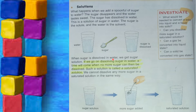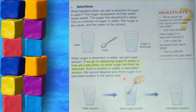When sugar is dissolved in water we get a sugar solution. If we keep dissolving sugar in water, a time will come when no more sugar can be dissolved — such a solution is called a saturated solution. We cannot dissolve any more sugar in a saturated solution. If we add more sugar to the sugar solution we already made, it will form a saturated solution and the extra sugar will not dissolve.